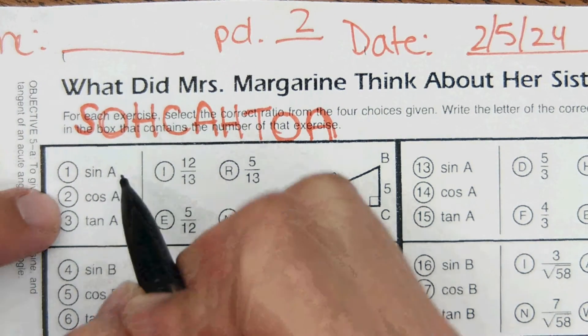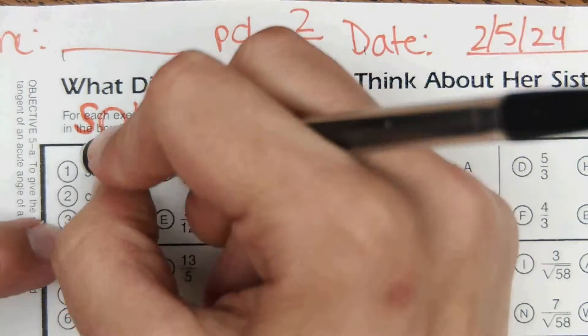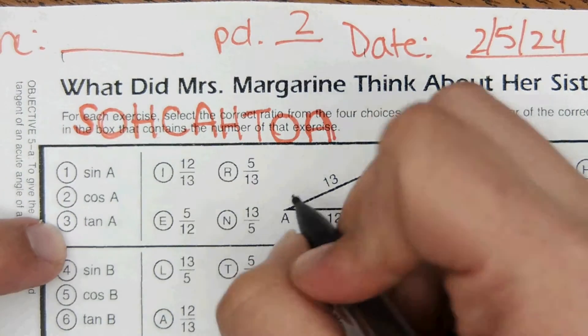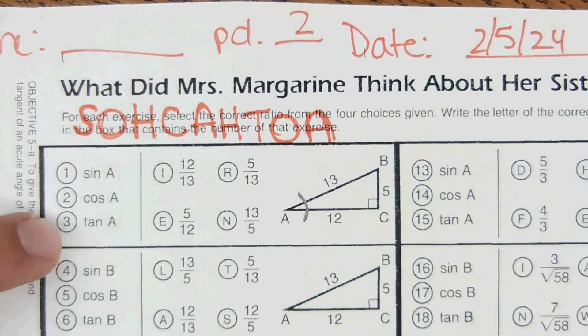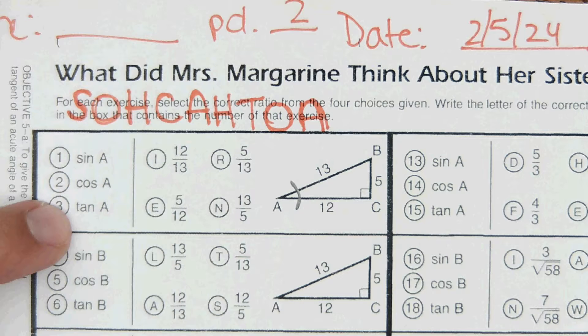For each set of problems, it's all referring to the same angle. So here it's all referring to angle A. For angle A, just put an arc right there. That's your designated angle.